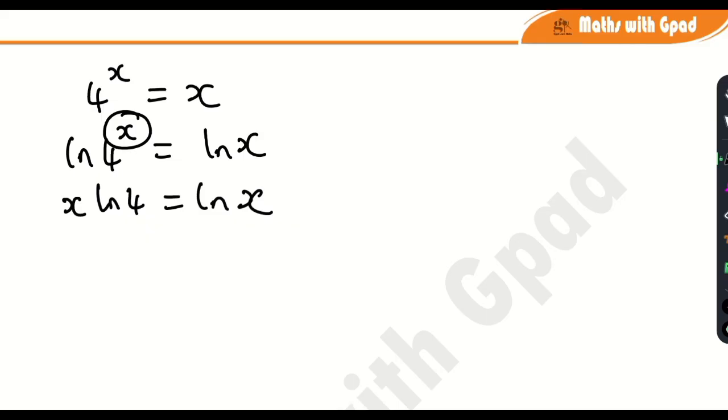So what am I going to do next now? I am going to divide both sides by x. So here by x and here by x. x cancels x, so I have that ln 4 is equal to ln x over x.